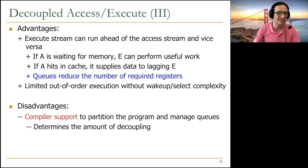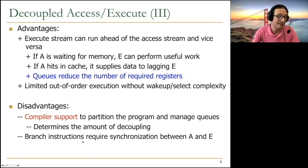Everything comes with disadvantages. Compiler was important for VLIW, compiler is important for models to release, compiler is important for decoupled access and execute. You need to have compiler support to partition the program and manage the queues. This determines the amount of decoupling you can get. People have developed interesting compilation techniques for this, not as much as VLIW has done and not as much as work that's going on in systolic arrays today. One other disadvantage is branch instructions require synchronization between A and E, because you're taking a single instruction stream and separating it into two instruction streams.